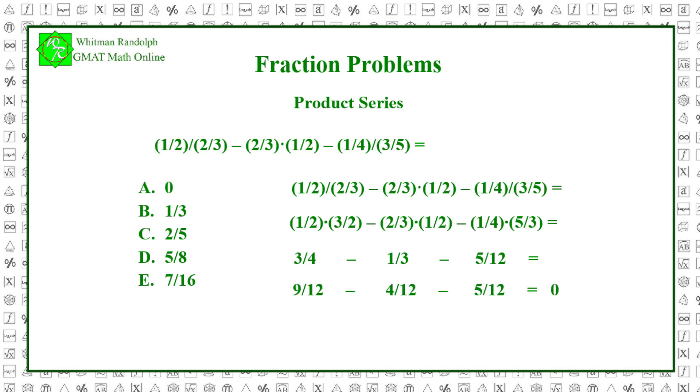And that equals 9 twelfths minus 4 twelfths minus 5 twelfths, which equals 0. So the correct answer is A.